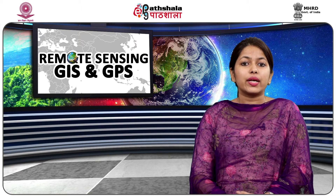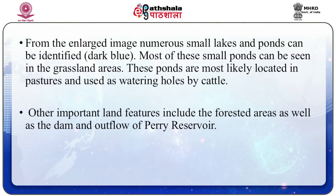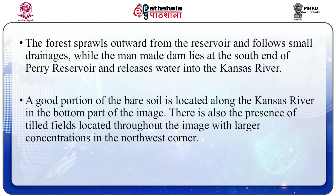A good portion of the bare soil is located along the Kansas River in the bottom part of the image. There is also the presence of tilled fields located throughout the image with a larger concentration in the northwest corner. From the enlarged image, numerous small lakes and ponds can be identified in dark blue, mostly in the grassland areas. These ponds are most likely located in pastures and used as watering holes by cattle. Other important land features include forested areas as well as the dam and outflow of the Perry Reservoir.